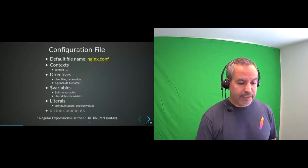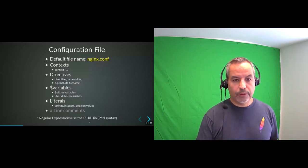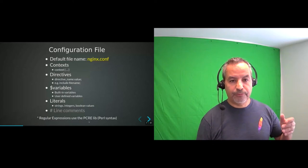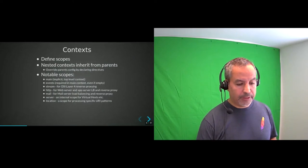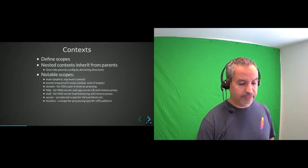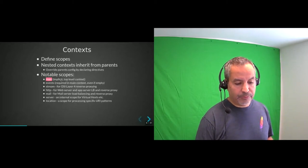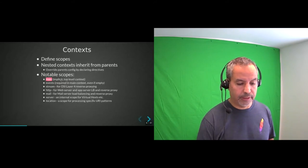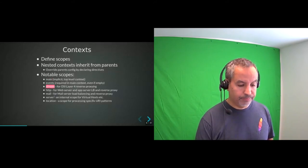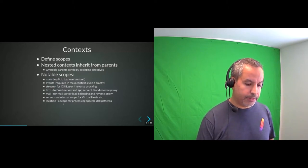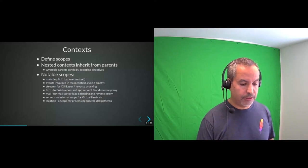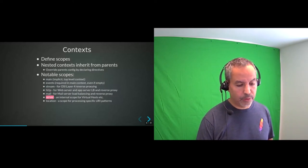Contexts define scopes. For example, you have a scope for http, a scope for mail, and a scope for stream if you do OSI layer 4 proxying. The main scope is implicit — it's the top level. Two of the common nested scopes used in reverse proxying are server — which goes inside http — and location, which goes usually inside server.